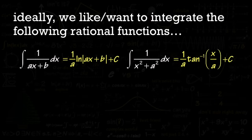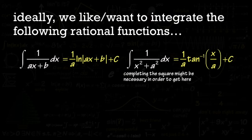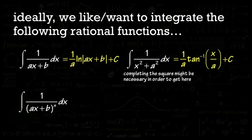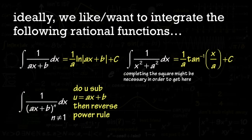Notice that for the second one, x squared plus a squared, we cannot factor that with real numbers. Sometimes you may end up with three terms — in that case, complete the square to get into that form. We can also integrate variations: the integral of 1 over (ax + b) to the nth power, where n is not equal to 1 — just do u-substitution and use the reverse power rule.